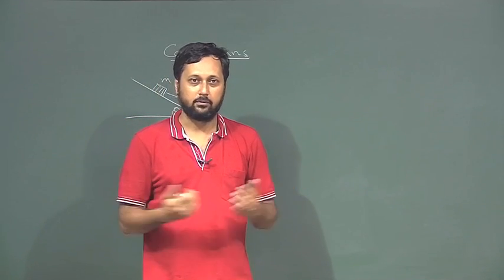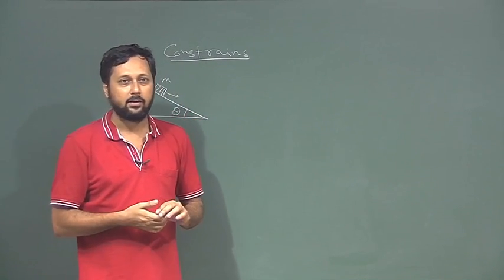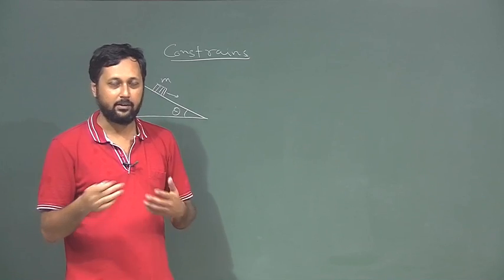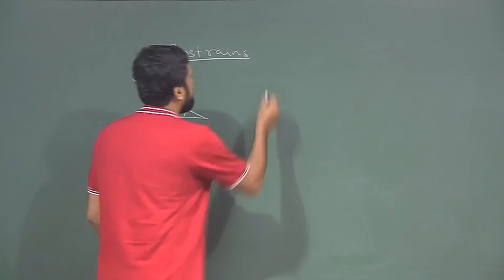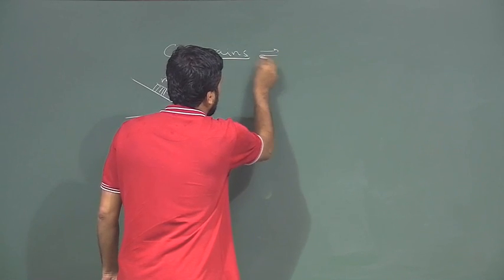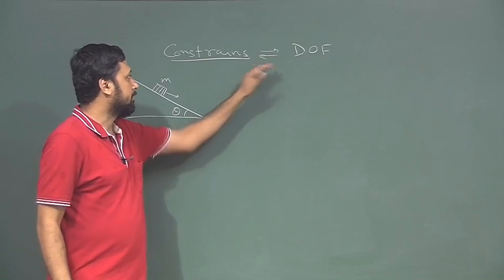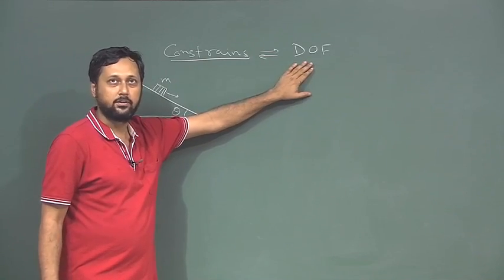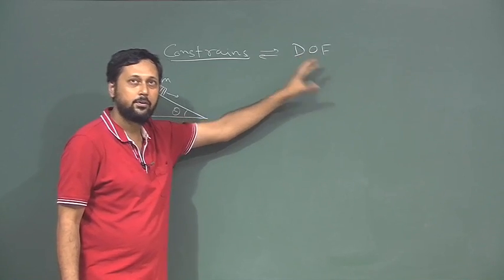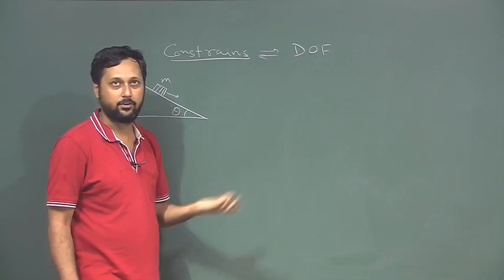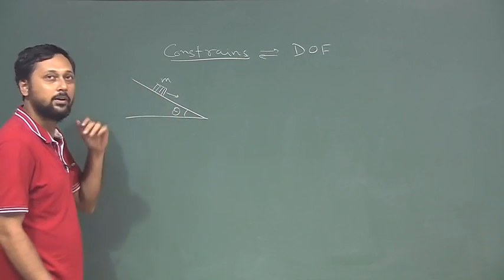Birds can fly, so they have additional degrees of freedom — and that is how you can understand the relationship between constraints and degrees of freedom. The terms constraint and degrees of freedom are antonyms of each other. If you have more constraints, you have less degrees of freedom. In this case it is a very constrained system, bound to move on this particular line.